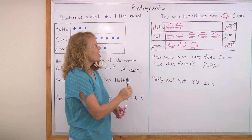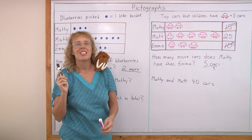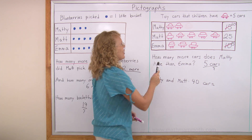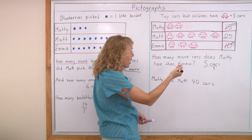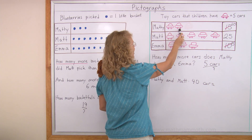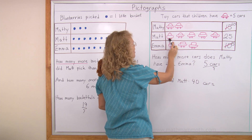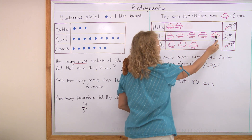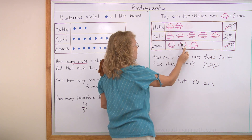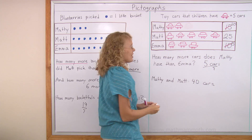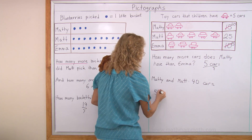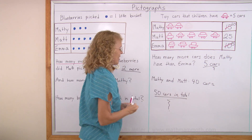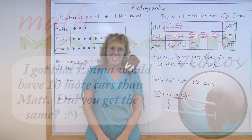Let's lastly count how many cars these children have in total. You can just count by fives using the pictures: five, ten, fifteen, twenty, twenty-five, thirty, thirty-five, forty, forty-five, fifty. Fifty cars in total. Okay, well done with this lesson.